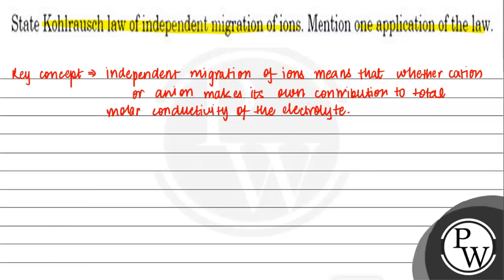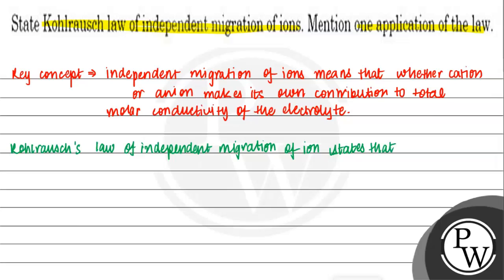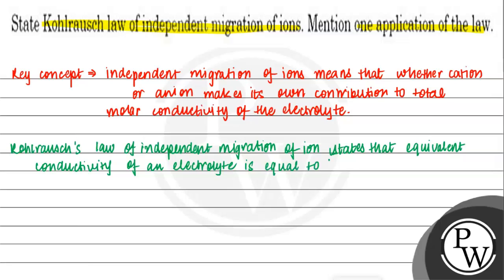Let's move on with the question. We will further solve this question by stating Kohlrausch's law. Kohlrausch's law of independent migration of ions states that the equivalent conductivity of an electrolyte is equal to the sum of the conductance of the anions and cations at infinite dilution.